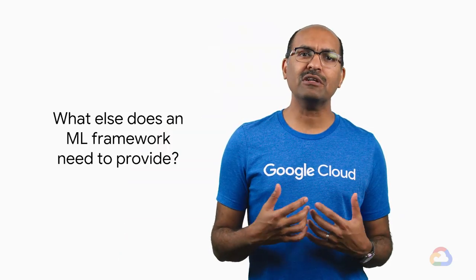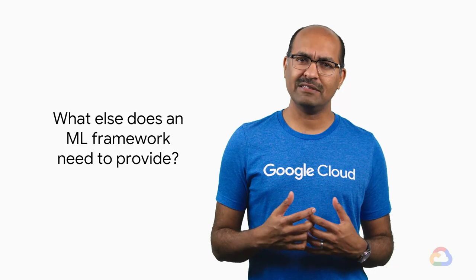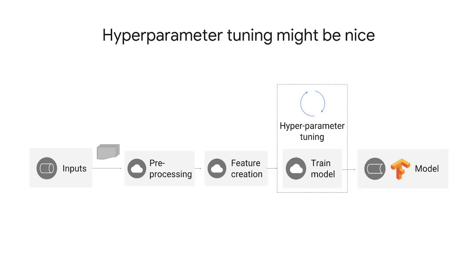What else does a machine learning framework need to provide? Hyperparameter tuning might be nice. When you do machine learning, you often pick a number of things arbitrarily — the number of nodes, the embedding, the stride size on your convolutional layer, the number of buckets in your embedding.